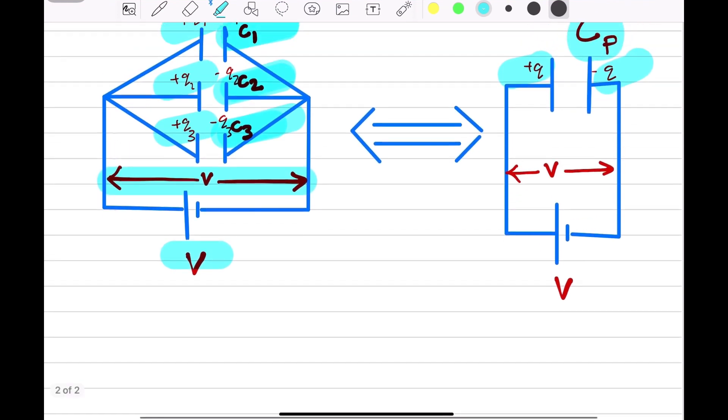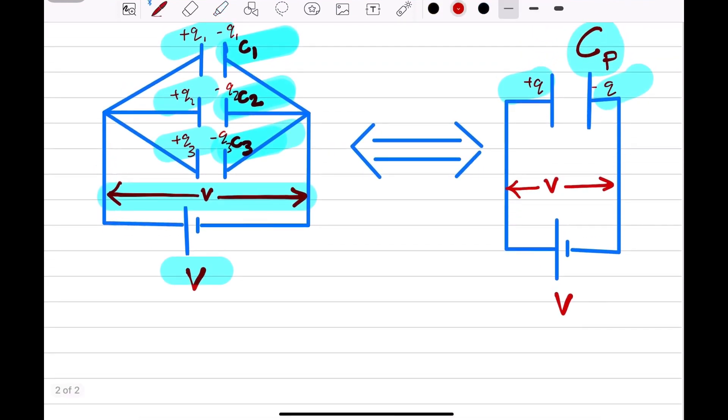Therefore, what we can write is, total charge Q is equal to Q1 plus Q2 plus Q3. Let me name this equation as equation star.